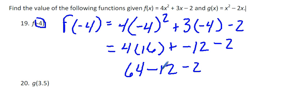64 minus 12 is 52 minus 2 is 50. So f of negative 4 is equal to 50.